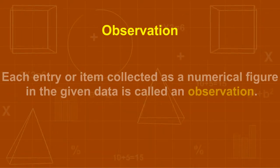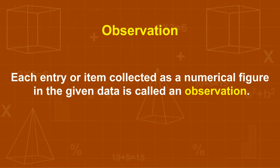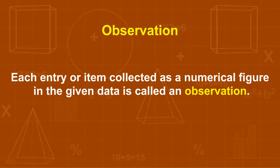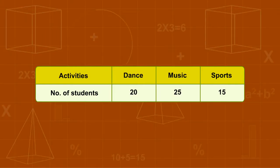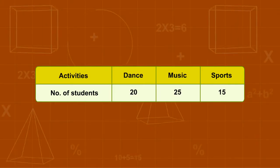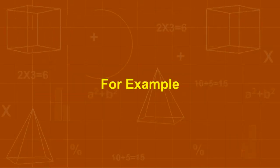Observation. Each entry or item collected as a numerical figure in the given data is called an observation. It is also known as variable and it is different for different data.